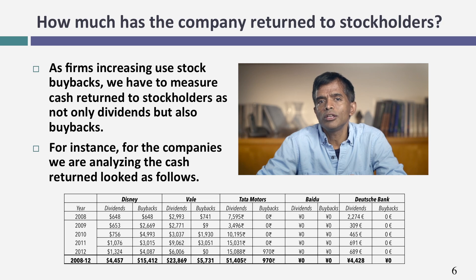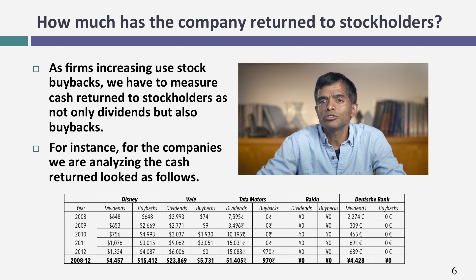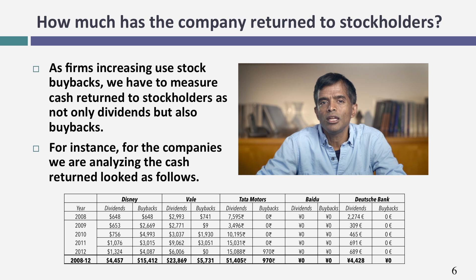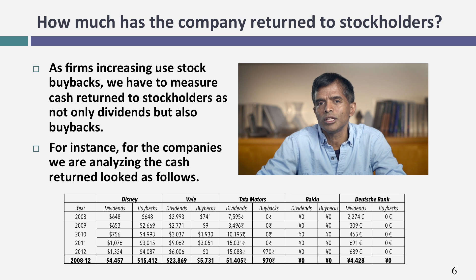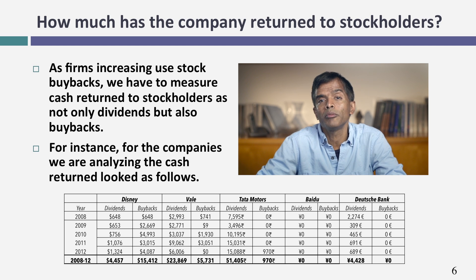Let's look at what the companies we're examining have actually returned to their stockholders. Starting with Disney: over the last five years, it's paid out dividends of roughly $4.5 billion. But in addition to those dividends, Disney has bought back almost $15.4 billion worth of stock. Collectively, over those five years, Disney has returned $19.9 billion to its stockholders. If you look at Vale, it has returned far more in the form of dividends than buybacks. With Tata Motors, Baidu, and Deutsche, almost all of the cash is taken in the form of dividends.